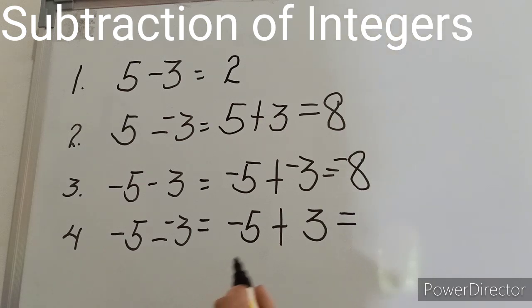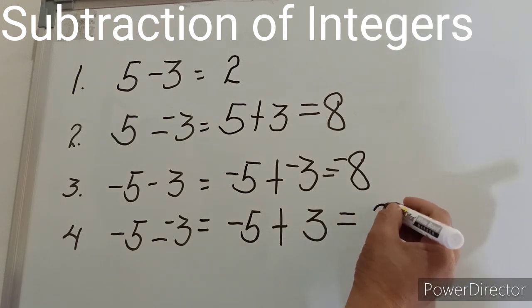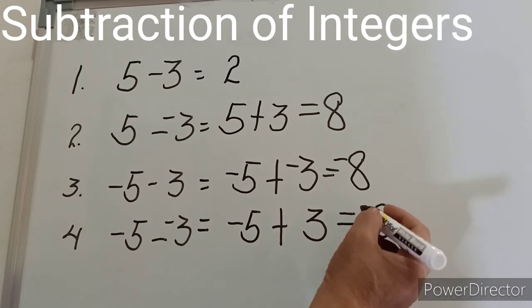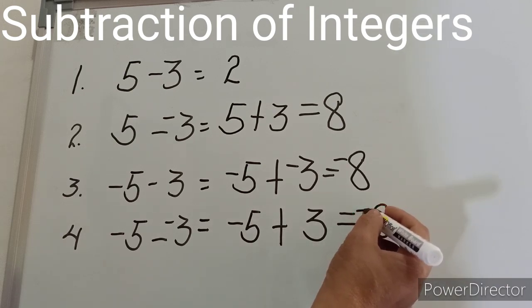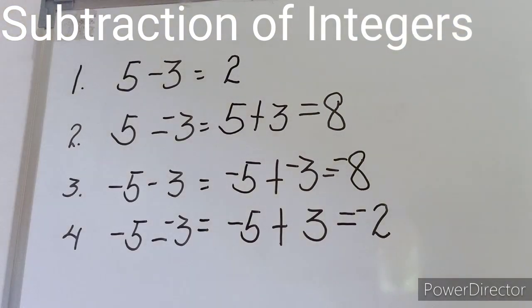In number four, we have negative five minus negative three, which becomes negative five plus positive three. The changes: the subtrahend was negative and has been changed to positive, and the operation subtraction becomes addition. We now have addition of unlike-signed numbers. We remove the smaller number from the bigger: five minus three is equal to two, but the sign of the number considered larger is negative, therefore we have negative two as the final result.